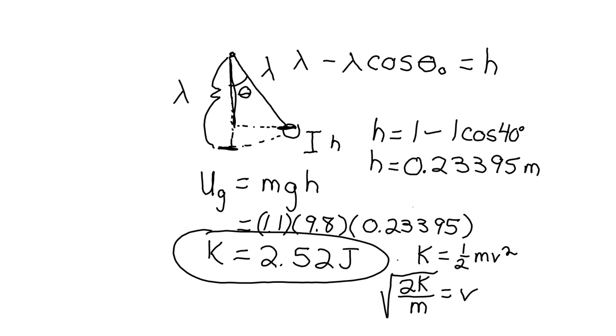And if you plug that number in, those numbers into our equation here, we have the square root of, open parenthesis, 2 times 2.52 divided by 1.1, close parenthesis, equals, and we get v is equal to 2.14 meters per second. So rounding it off to, I believe we have two significant digits in our numbers here, we should say that v is equal to 2.1 meters per second, and that the energy is equal to 2.5 joules. And that is the answer to the question.